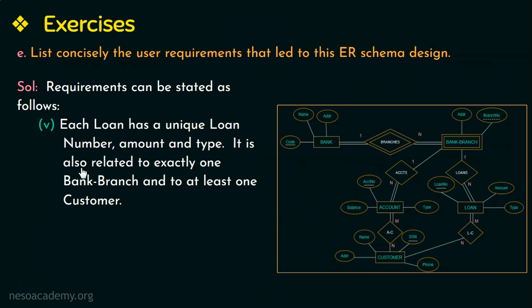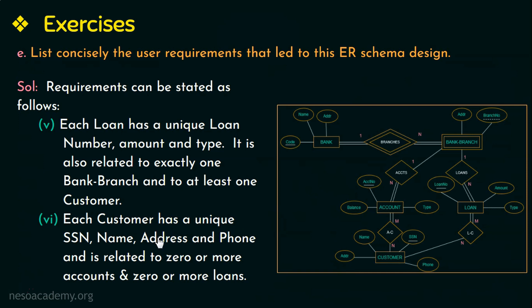Each loan has a unique loan number, amount, and type. It is also related to exactly one bank branch and to at least one customer — meaning any loan that is availed belongs to or is taken by at least one customer. This requirement is similar to the previous one about accounts.